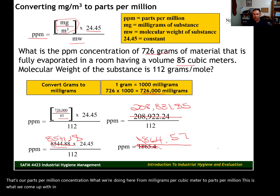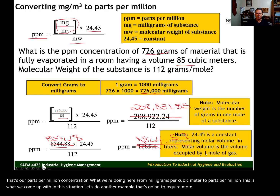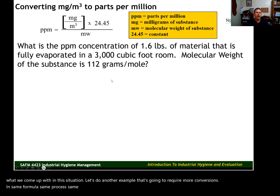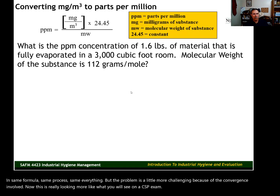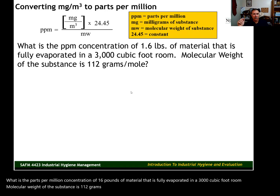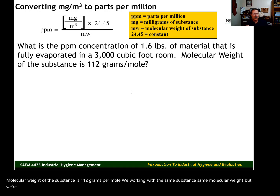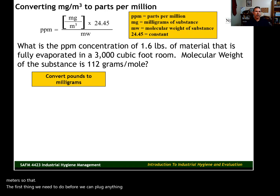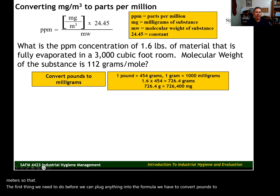Let's do another example that requires more conversions — same formula, same process, but a more challenging problem due to the unit conversions involved. This one is more like what you'll see on a CSP exam. What is the parts per million concentration of 1.6 pounds of material that is fully evaporated in a 3,000 cubic foot room? The molecular weight of the substance is 112 grams per mole.